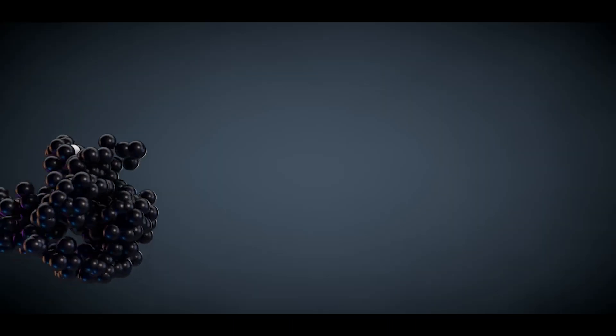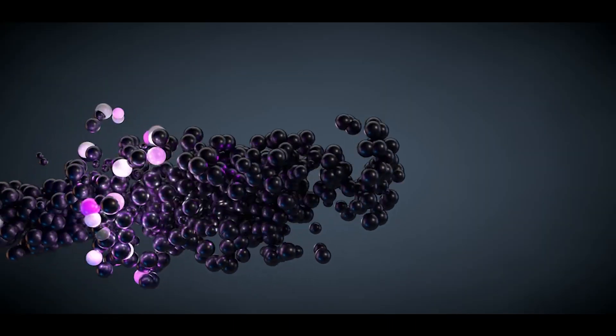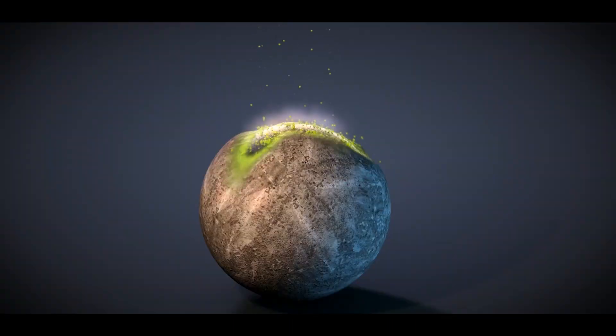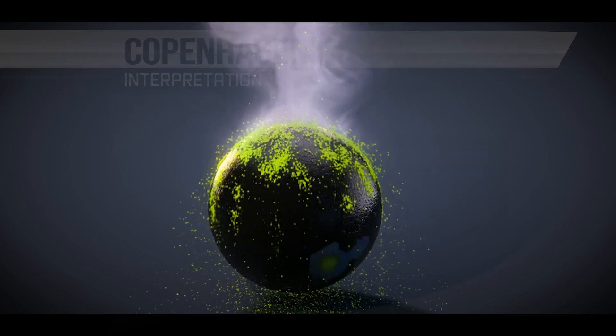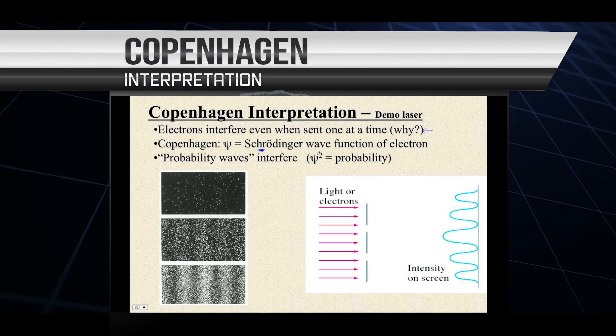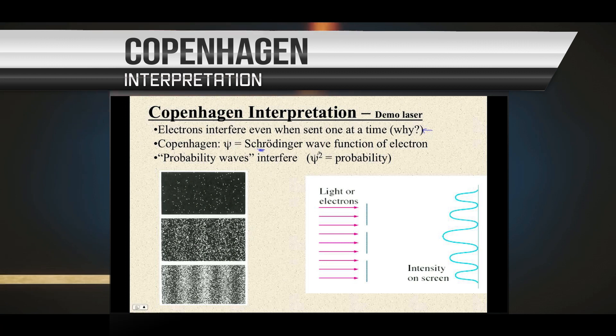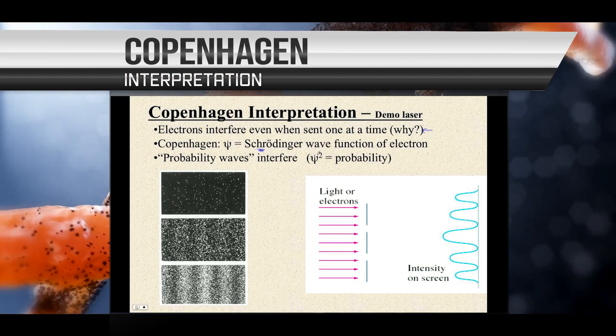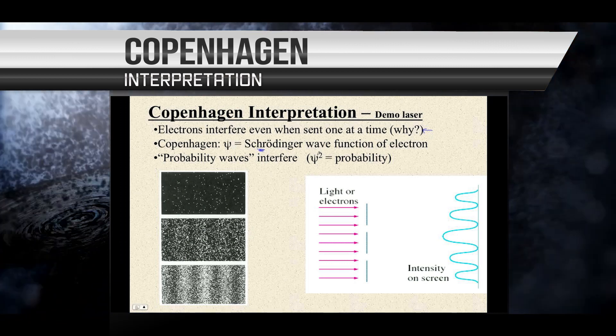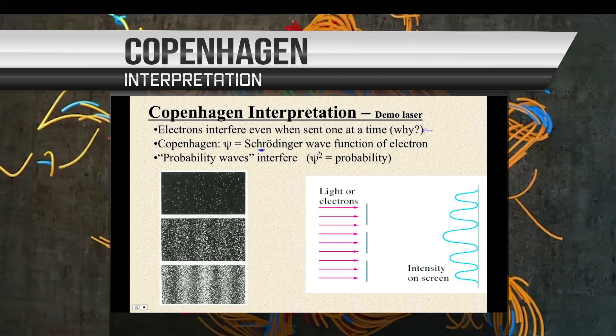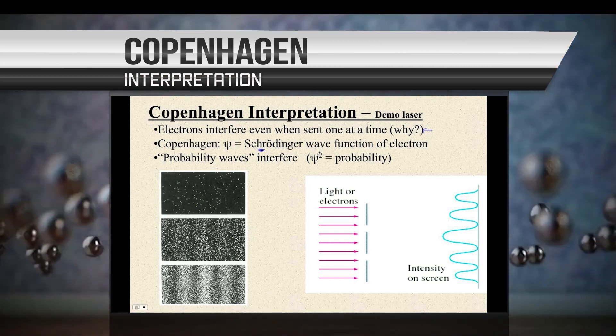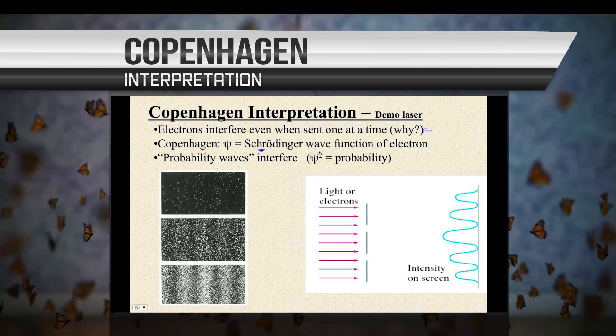There are several different interpretations of quantum mechanics that attempt to explain the role of observation in quantum physics. The Copenhagen interpretation, which is the most well-known and widely accepted interpretation, suggests that the act of observing a quantum object collapses its wave function, which is a mathematical representation of its state. This collapse determines the definite position and momentum of the object and allows us to make predictions about its future behavior.